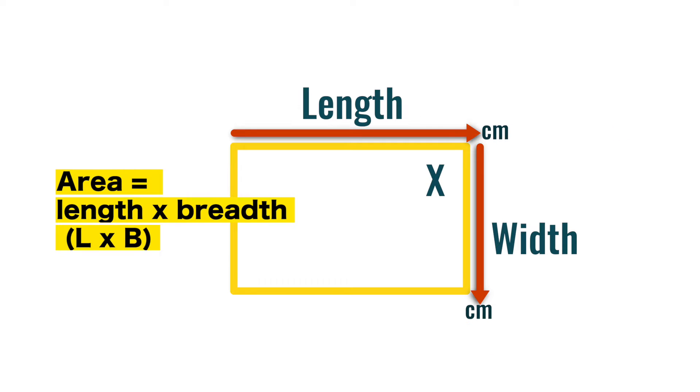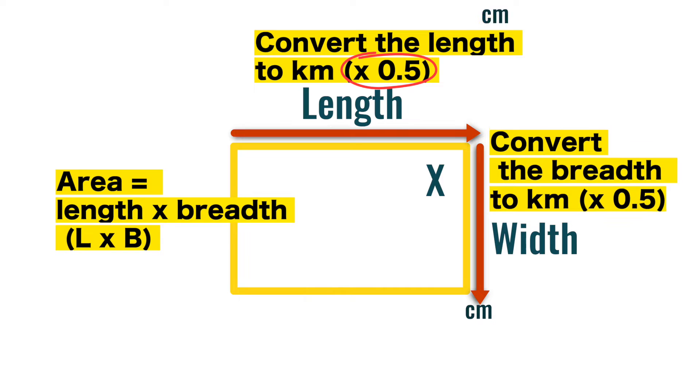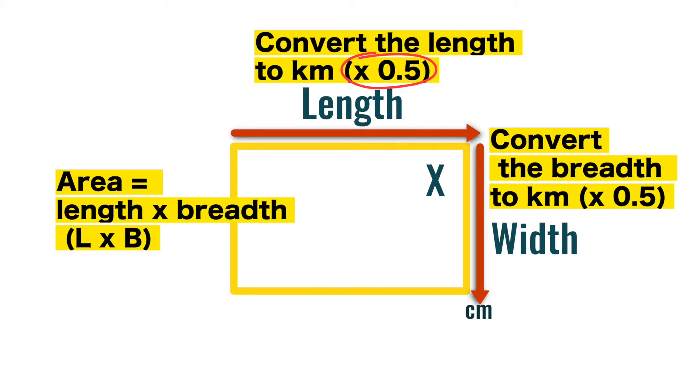What you have to do here, is to convert each dimension. So what we need to do is to convert the length to kilometres. And remember, as you learnt in distance, when we convert from centimetres to kilometres on a topographical map, we multiply by 0.5. So we take our length in centimetres and multiply that by 0.5 to convert it to kilometres. We do the same for our breadth. We take the breadth in centimetres, then multiply it by 0.5 to convert it to kilometres.